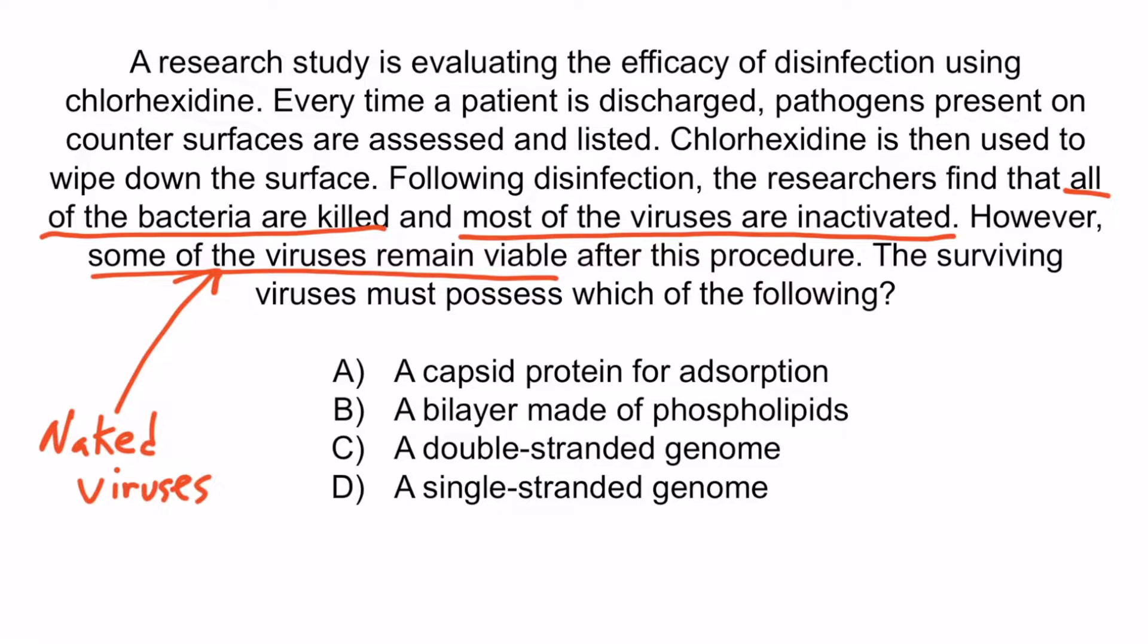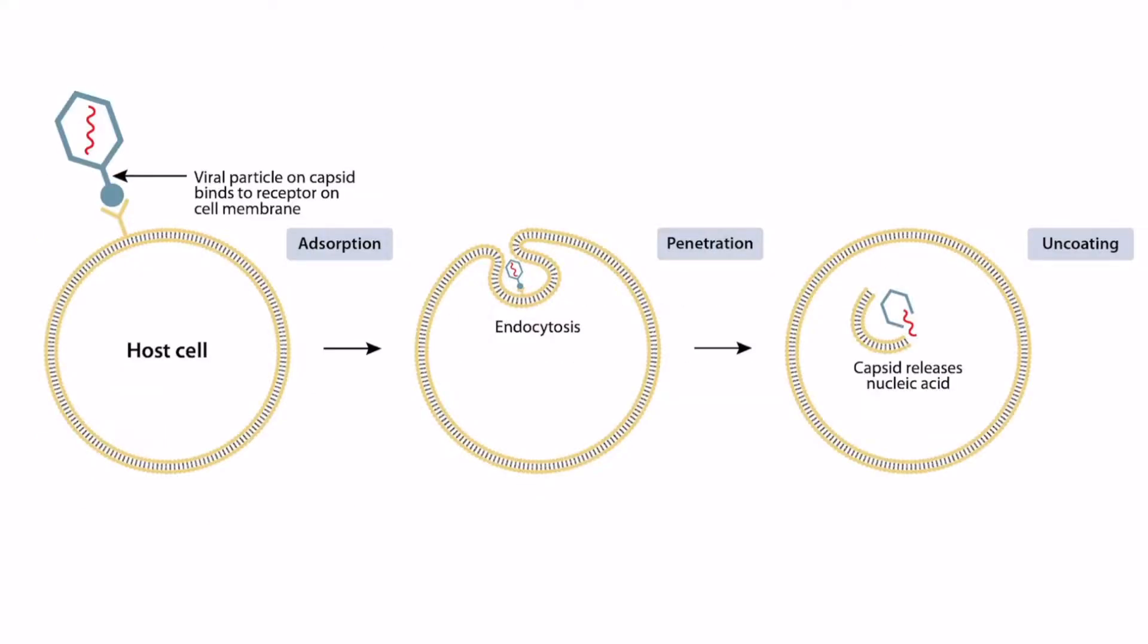So those viruses that remain viable are likely naked viruses. So which of the following must be possessed by these naked viruses? That would be choice A. A capsid protein for adsorption. Recall that viral particles on the capsid of naked viruses interact with cell membranes, allowing them to enter the cell through endocytosis.